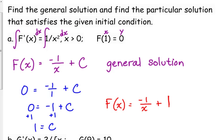You could get a common denominator and rewrite that. Just to jog your memory, that would give us big f of x is equal to x minus 1 over x, if you were to combine those fractions.